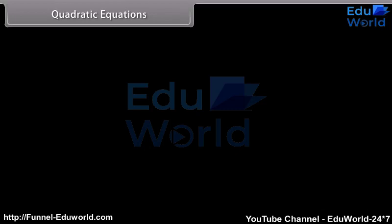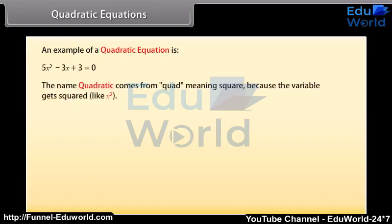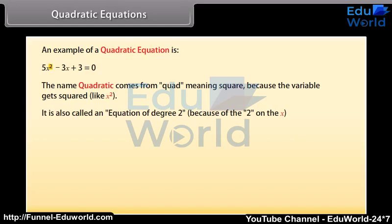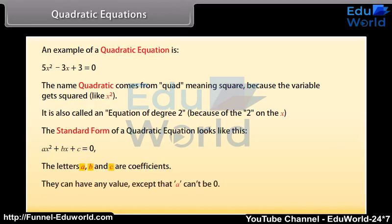Quadratic Equations. An example of a quadratic equation is shown here. The name quadratic comes from 'quad' meaning square, because the variable gets squared, like x squared. It is also called an equation of degree 2 because of the 2 on the x. The standard form of a quadratic equation looks like this: ax squared plus bx plus c is equal to zero. The letters a, b, and c are coefficients — they can have any value except that a cannot be zero. The letter x is the variable or unknown.